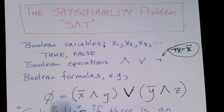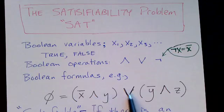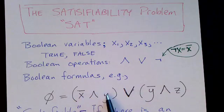Here's a formula. We'll call it phi. And it just says, remember this is conjunction. It looks like an A, so it's AND. This is disjunction. It's an OR. So, NOT X AND Y OR NOT Y AND Z.